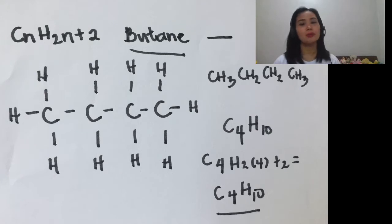So what we have here is an example of an organic formula of butane, CnH2N plus two. We have here one, two, three, four. This is the expanded formula. Take note, it has only single bond. And then we have here the condensed formula and the molecular formula.